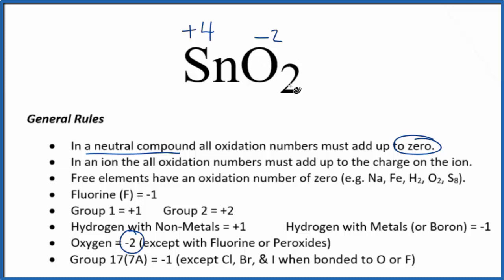We can check our work. 2 times minus 2, that's minus 4. So minus 4 and plus 4, that gives us zero.